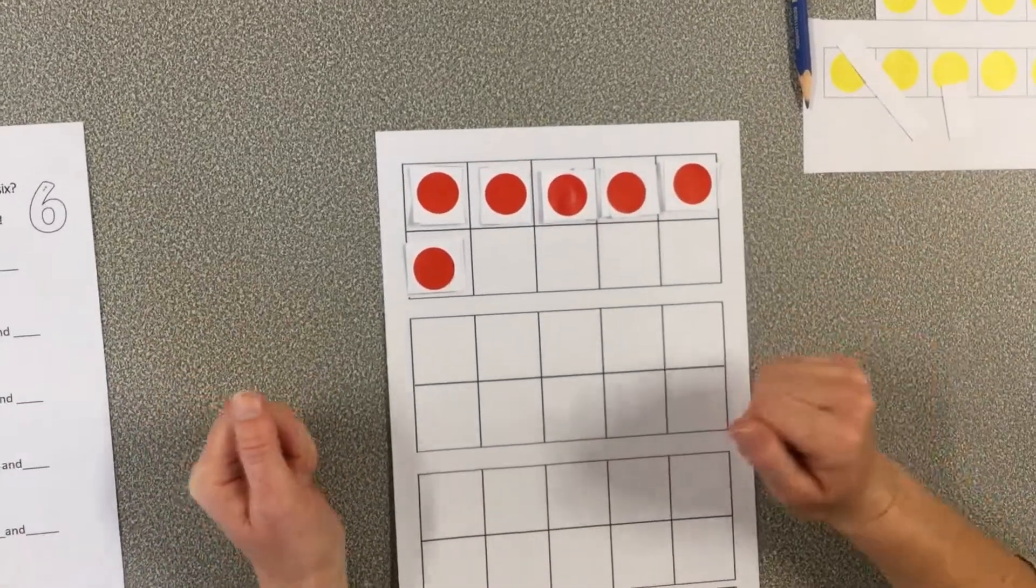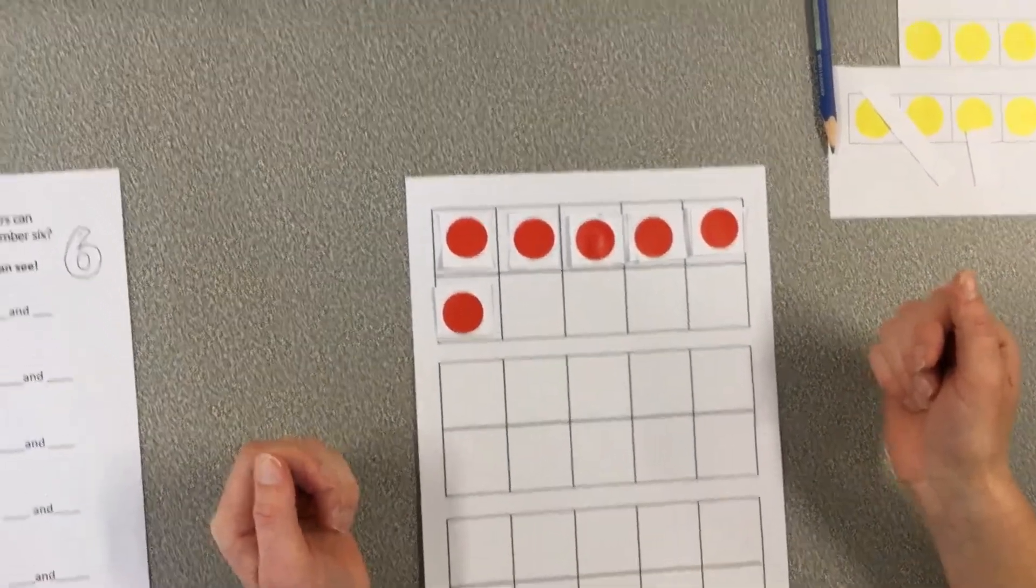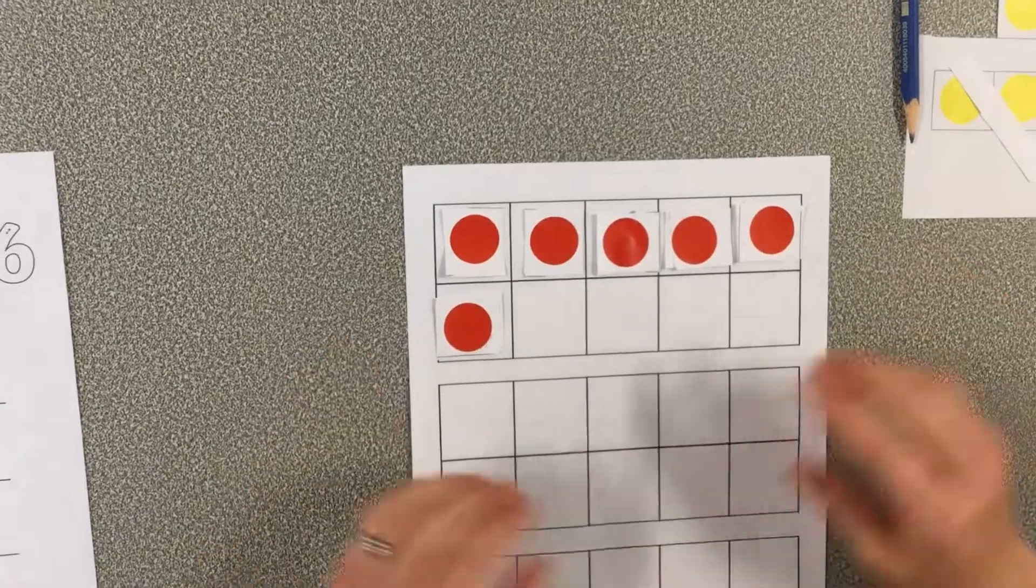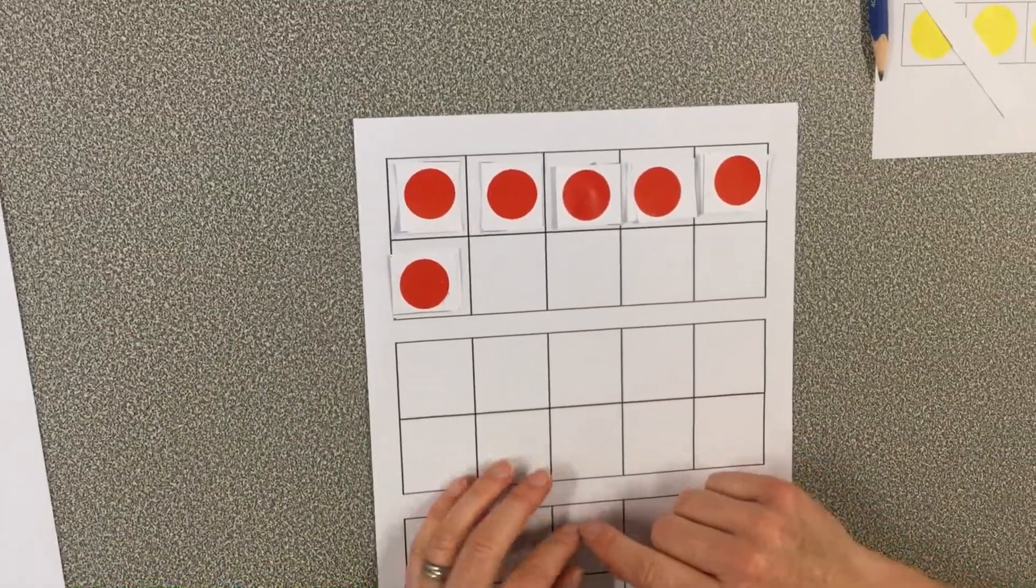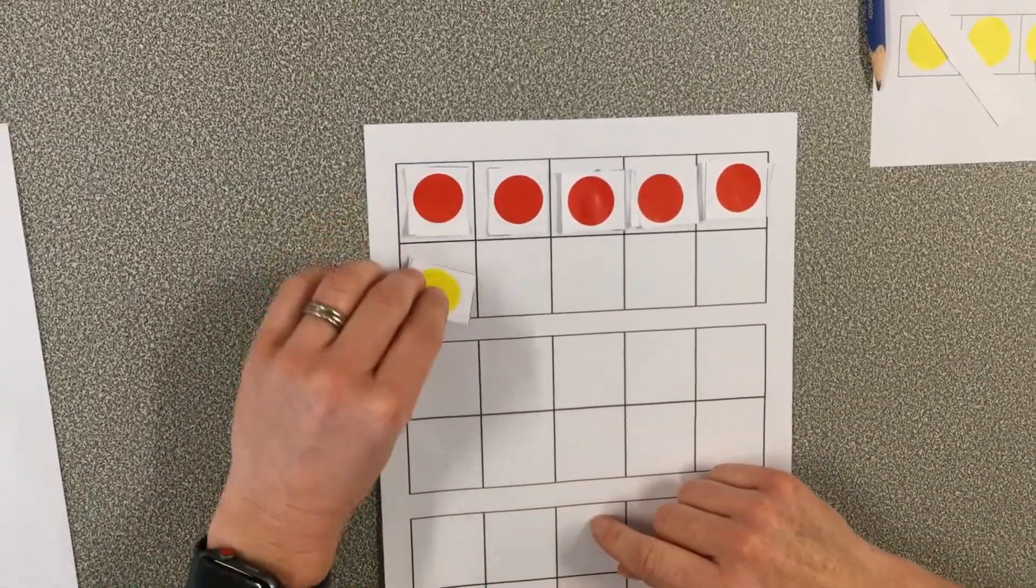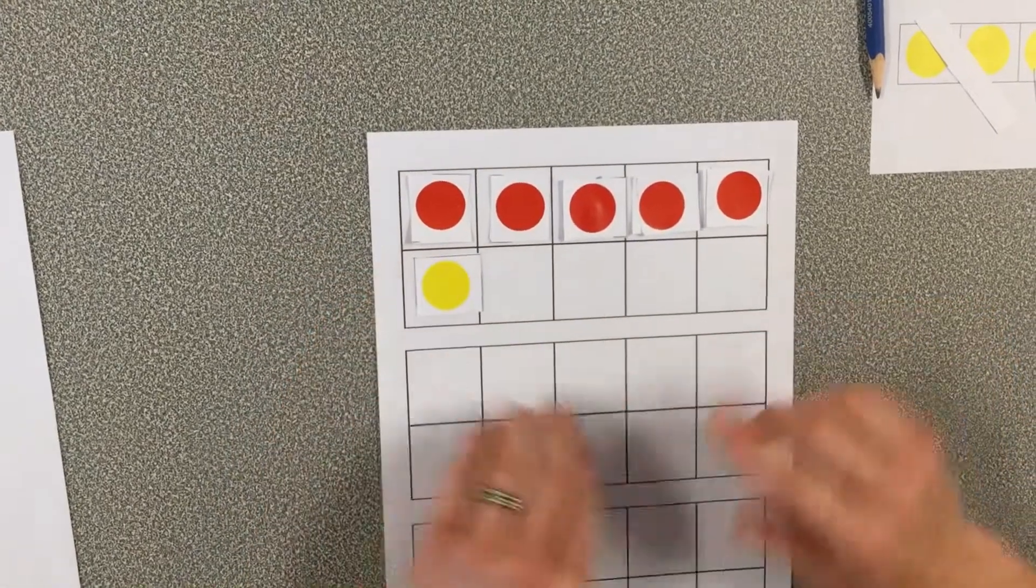Now what I can do is I can practice my partitioning with my counters. And there's a few different ways to do this on a tens frame. I could start by just turning this one over on its own.